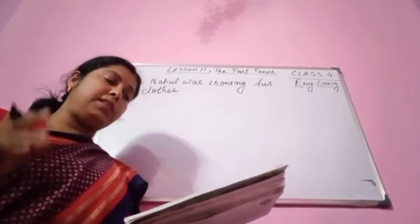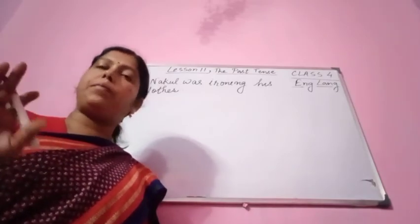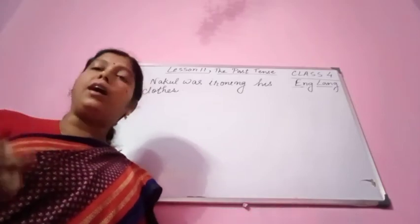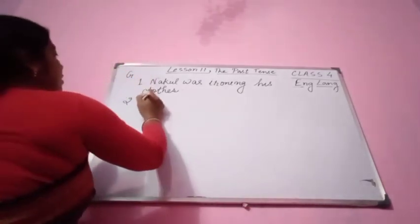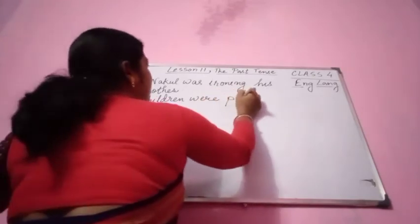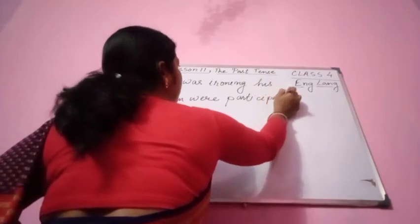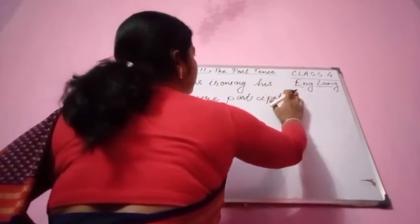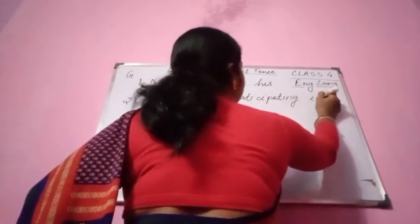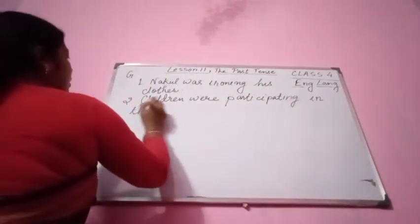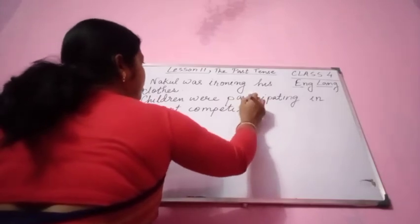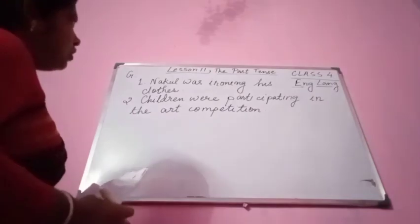Number two: 'Children participate art competition.' Keep in mind the sentence should be in the past continuous tense. Children were participating in the art competition.